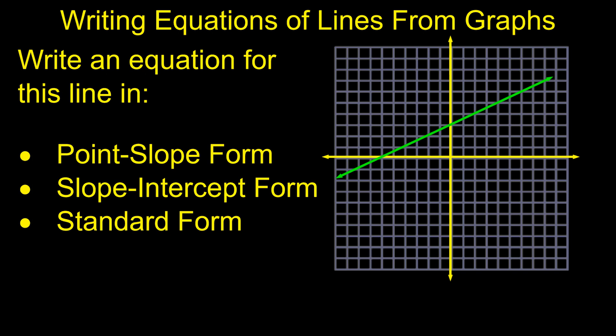In this video we're going to look at what if you're given a line and you have to write an equation for that line, as opposed to being given an equation and having to graph it. We're going to use this line a couple different ways — we're going to write it in point-slope form, slope-intercept form, and standard form.